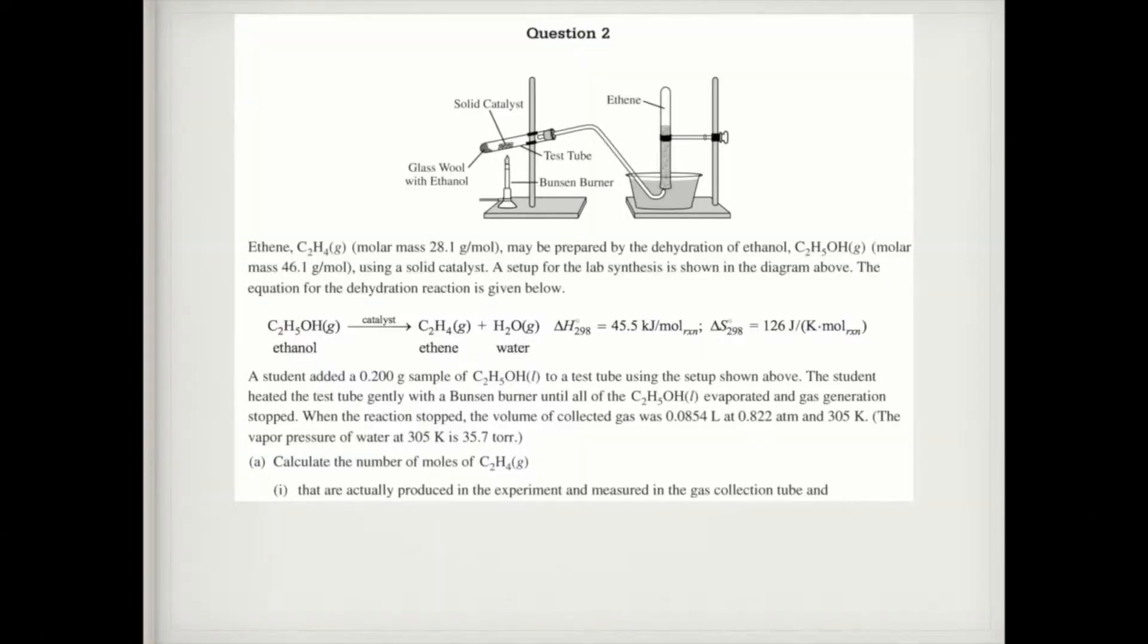Alright, question two: Ethene, which has a molar mass of 28.1 g/mol, may be prepared by the dehydration of ethanol. It gives the molar mass using a solid catalyst. A setup for the lab synthesis is shown in the diagram above. The equation for the dehydration reaction is given below. A student added a 0.200 gram sample of ethanol to a test tube using the setup shown above.